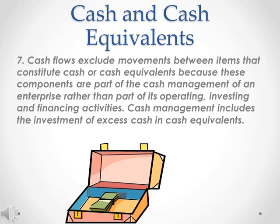Para 7: Cash flows exclude movements between items that constitute cash or cash equivalents, because these components are part of the cash management of an enterprise rather than part of its operating, investing, and financing activities. Cash management includes the investment of excess cash and cash equivalents.